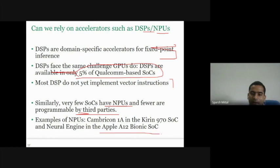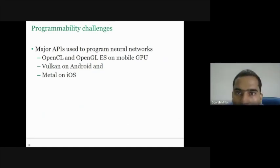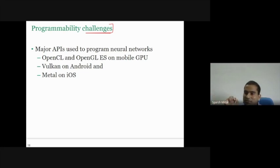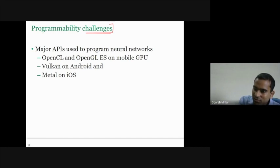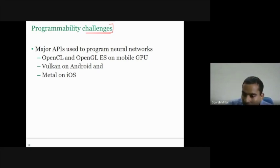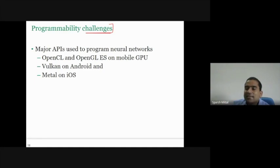Examples of NPUs include the Apple Bionic SoC's neural engine and Kirin's Cambricon-1. Now, the big picture: we want to run an app on many mobile phones. The challenge is deciding what to optimize for — CPU, GPU, or DSP? And if CPU, should it be low-power or high-performance? Some major APIs used to program neural networks on mobile GPUs include OpenCL and OpenGL. On Android there is Vulkan, and on iOS there is Metal.